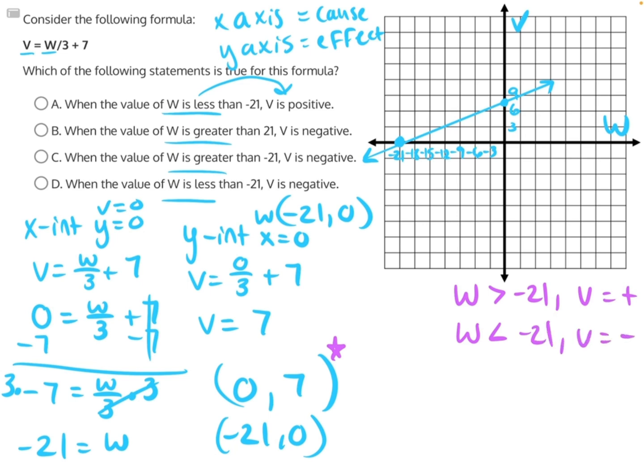So now let's take a look at our answer choices. A says when the value of w is less than 21, v is positive. Well, everything to the left of v equals 21 has negative v-values, not positive ones. So that is incorrect.